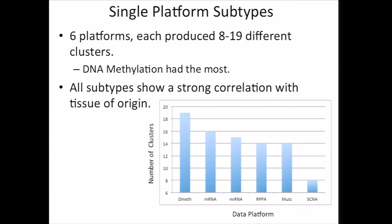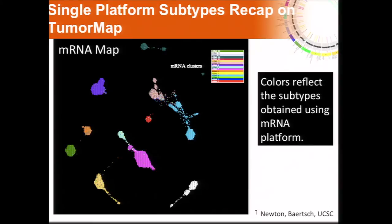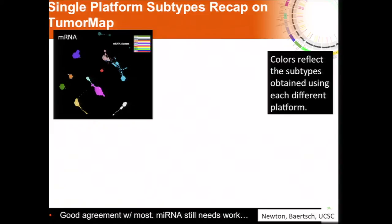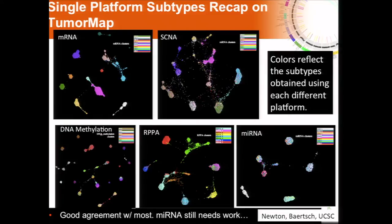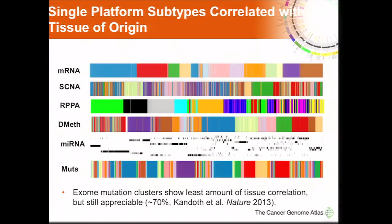The clusters we got from each separate platform ranged in size from the smallest — eight subtypes from copy number — all the way up to 19 from DNA methylation subtypes. This is what it looks like on that tumor map: each color is a different subtype from the mRNA map, not tissue. Here are the other subtypes for five of the platforms — we don't have a layout for mutations yet. They correspond pretty well; the tumor map pretty much recapitulates the subtypes defined by the working groups, though we still have some work to do on processing certain data platforms.